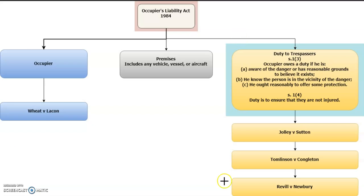The first thing to note about the Occupier's Liability Act 1984 is that it imposes a duty on occupiers in relation to persons other than their visitors, under section 1(1)(a). This includes trespassers and those persons who have exceeded their permission by going somewhere in a property that they're not entitled to be.